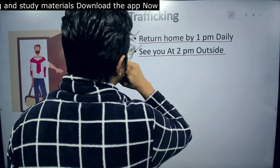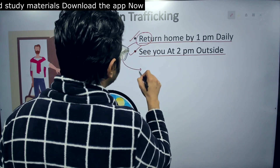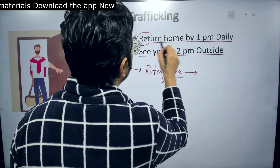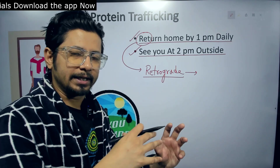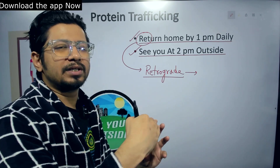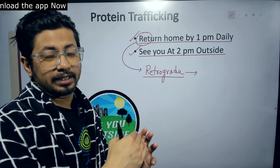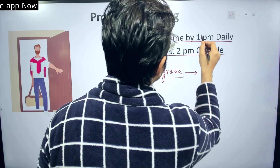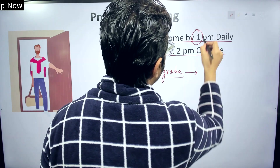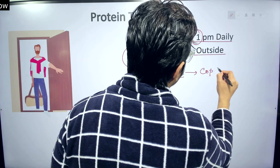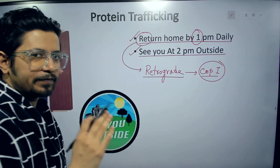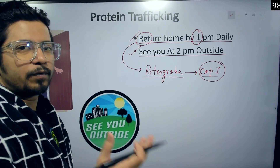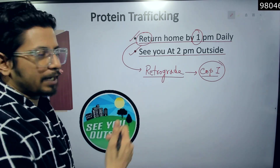When we write 'Return home by 1 pm daily,' the 'Ret' stands for retrograde transport. Retrograde means returning home — here 'home' represents the nucleus or ER, so the journey from the cell membrane toward the nucleus is a retrograde, or backward, journey. '1 pm' tells us it involves COP1 vesicles. COP1 proteins are involved in the formation of vesicles in retrograde, or backward, transport.